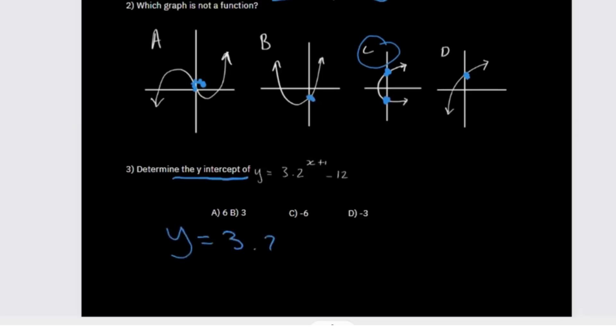And so from there we're going to say y equals 2 raised to zero plus one. That's basically 2 raised to one, which is 2, multiplied by 3, which is 6. And then 6 minus 12.